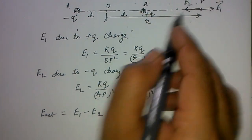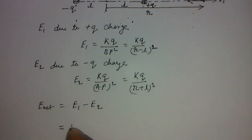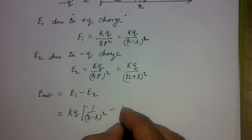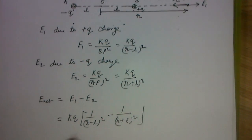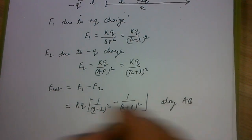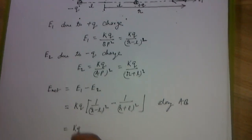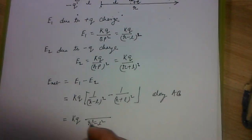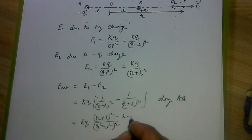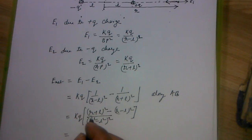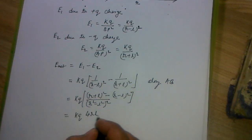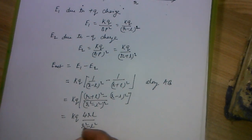When two vectors have opposite direction, we subtract their magnitudes. Taking KQ as common: E_net = KQ [1/(R minus L)² minus 1/(R plus L)²]. Taking LCM gives (R plus L)² minus (R minus L)² all over (R² minus L²)². Applying the identity (A+B)² minus (A-B)² = 4AB, the numerator becomes 4RL, giving E_net = KQ times 4RL divided by (R² minus L²) whole square.